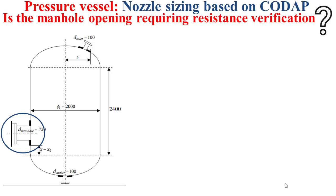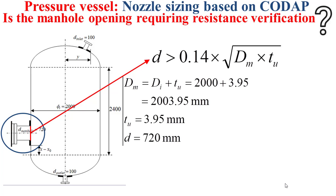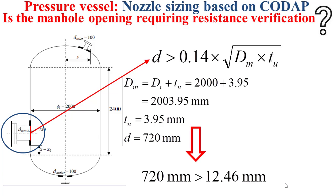I have my pressure vessel — this is the manhole, and the diameter of the opening on which the manhole is carried out is highlighted here in red. This manhole opening requires a resistance verification if its diameter small d is higher than 0.14 multiplied by the square root of the mean diameter of the shell multiplied by the useful thickness of the shell. Based on the internal diameter of the shell, the useful thickness, and the opening diameter small d equal to 720 millimeters, we can easily show that the manhole opening requires a resistance verification.